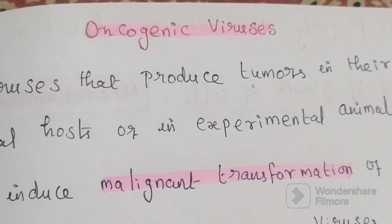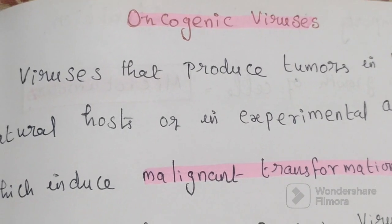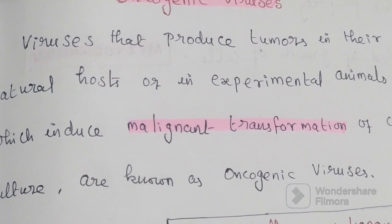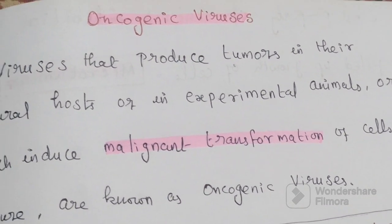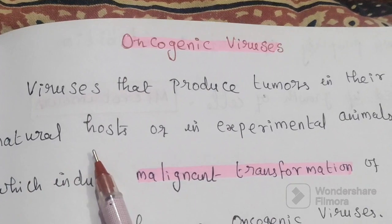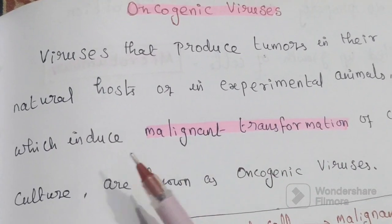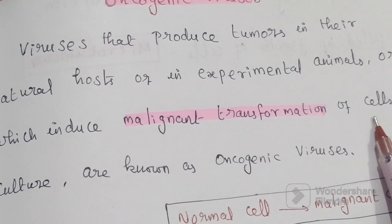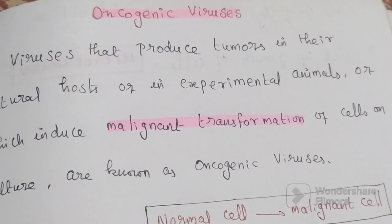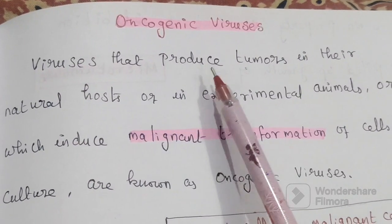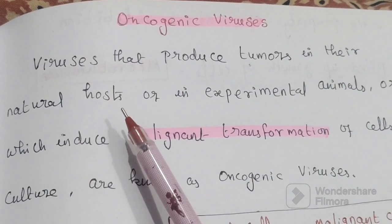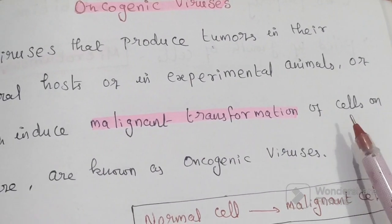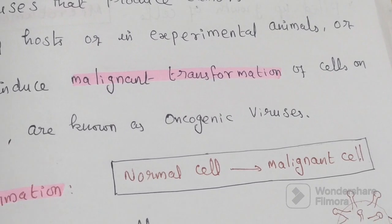Today's topic of discussion is oncogenic viruses. Oncogenic viruses are viruses that produce tumours in their natural host or in experimental animals, or which induce malignant transformation of cells in culture.